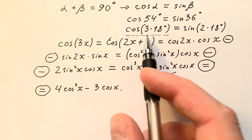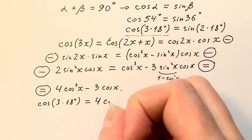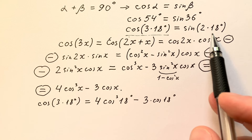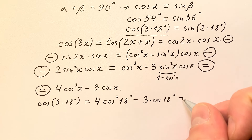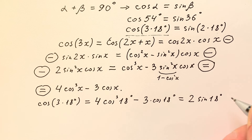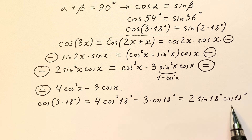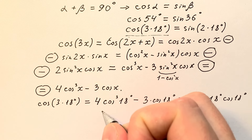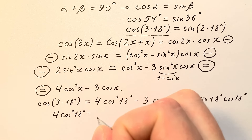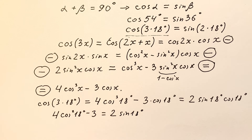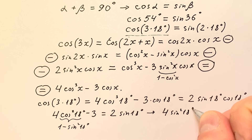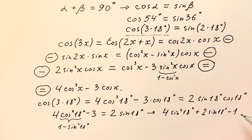This means we can write cosine of 3 times 18 degrees as 4 cosine cubed 18 degrees minus 3 cosine 18 degrees, and it equals sine of 2 times 18 degrees, which equals 2 sine 18 degrees cosine 18 degrees. We know that cosine 18 degrees is greater than zero, so we can divide both sides by cosine 18 degrees. We get 4 cosine squared 18 degrees minus 3 equals 2 sine 18 degrees. Now writing cosine squared 18 degrees as 1 minus sine squared 18 degrees, we get 4 sine squared 18 degrees plus 2 sine 18 degrees minus 1 equals 0.